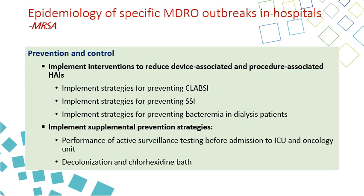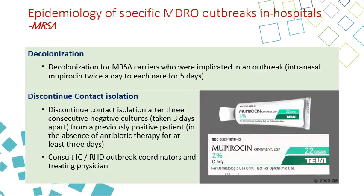Supplementary preventive measures include active surveillance, decolonization, and chlorhexidine baths. Decolonization of MRSA is done by intranasal antimicrobial called mupirocin twice a day for five days. We usually discontinue contact isolation for a patient who had MRSA if they have three consecutive negative cultures taken three days apart, and you need to consult the infection control and ICRHD outbreak coordinators before doing that.